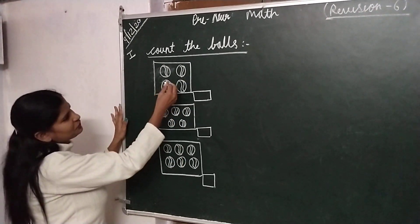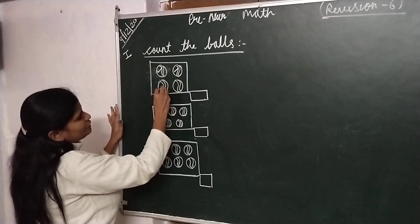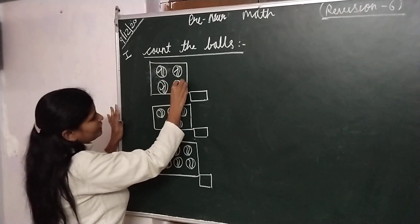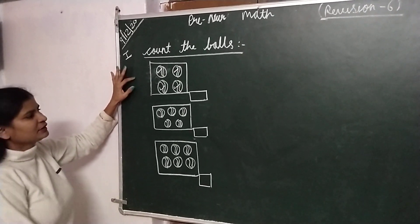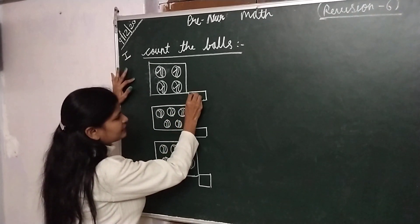So first box, count the balls: 1, 2, 3, 4. There are 4 balls in this box and we will write the answer in this box: 4.